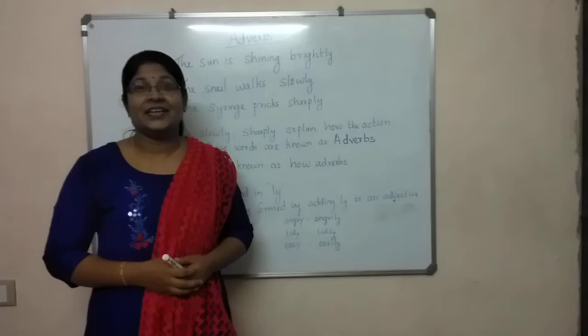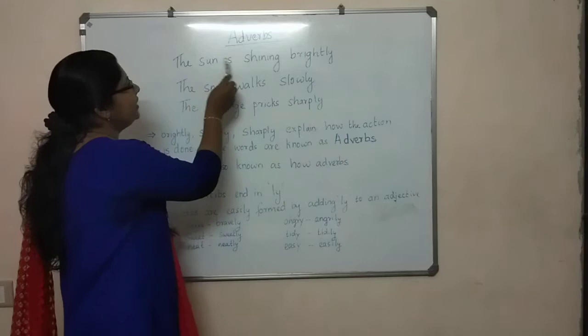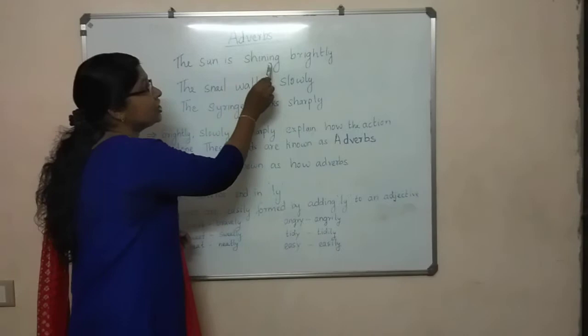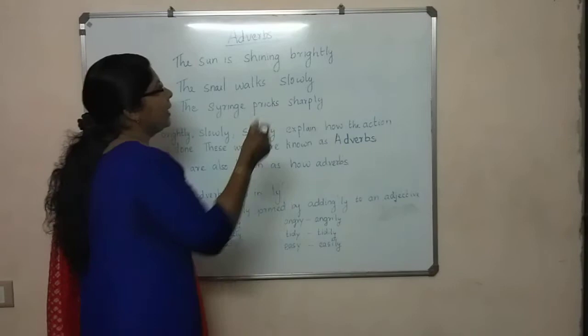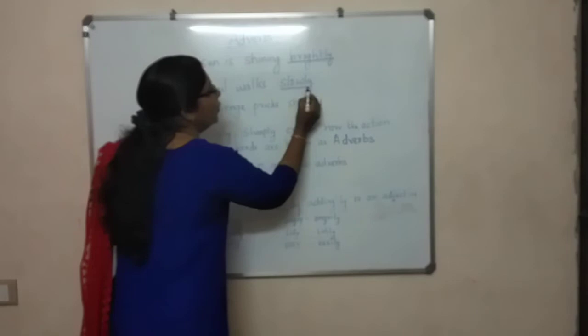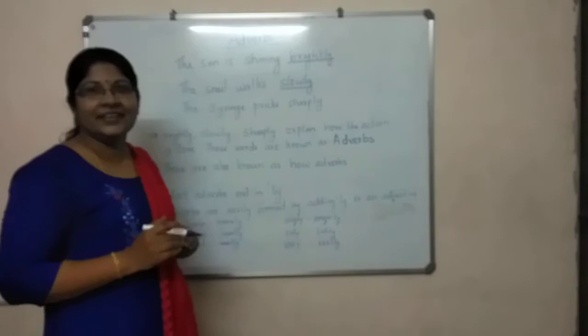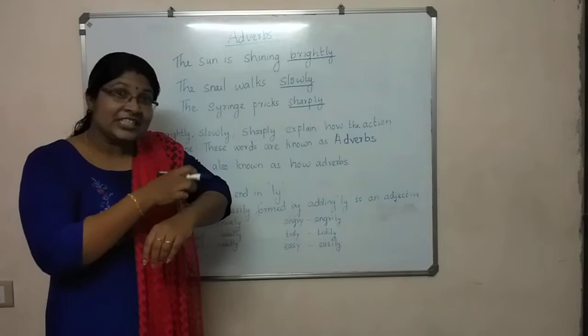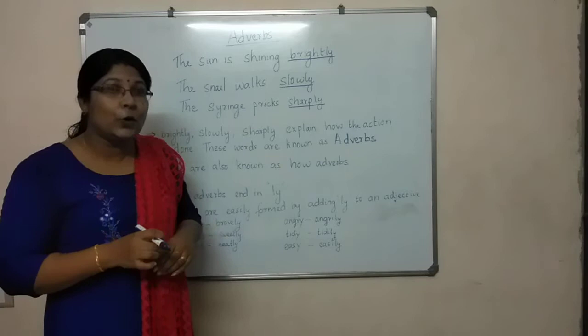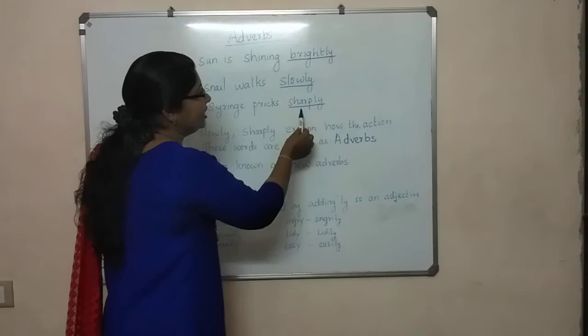Children, listen carefully. The sun is shining brightly. What is the meaning of that? Shining brightly. The snail walks slowly. The syringe pricks sharply. So see — brightly, slowly, sharply.